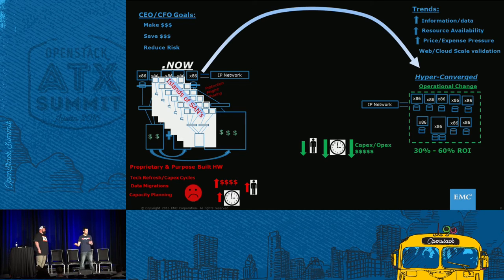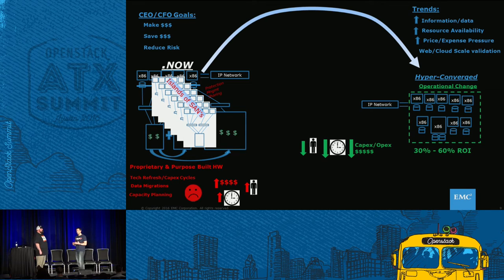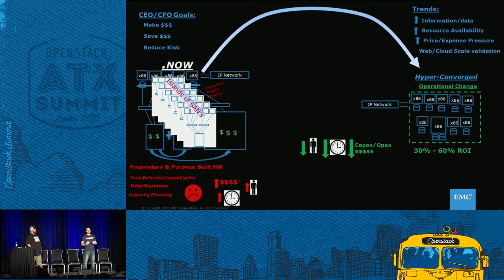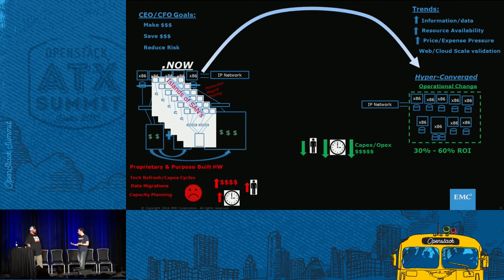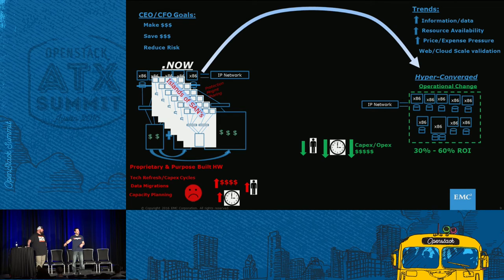Service providers love the hyperconverged model because their goal is to make money by reducing costs, and a hyperconverged software-defined storage architecture is the most optimal way to achieve the best TCO. That's why we see many service providers implementing this model. Enterprises are a different story — they've built huge IT organizations to manage three layers, and when you move to this model they ask, 'What does it mean to be generalists now?'